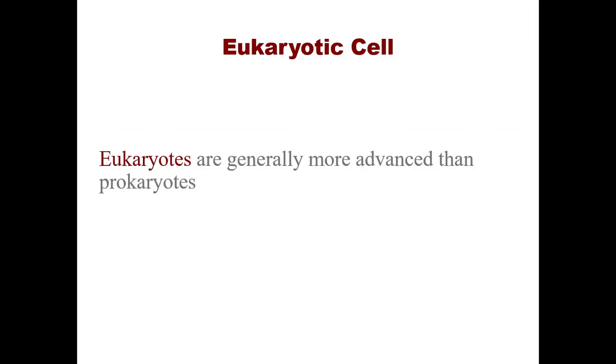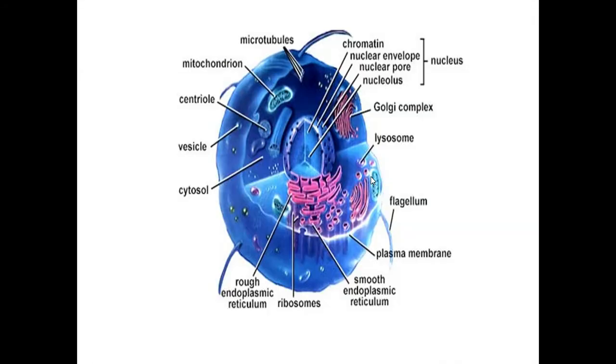Eukaryotic cells are generally more advanced than prokaryotes. Have a look at this generalized eukaryotic cell with a defined nucleus including chromatin, nuclear envelope, nuclear pores, and nucleolus. Other organelles also have membrane-bounded structures. The difference between prokaryotes and eukaryotes is that prokaryotic cells do not have membrane-bounded organelles or a defined nucleus, while eukaryotes have both.